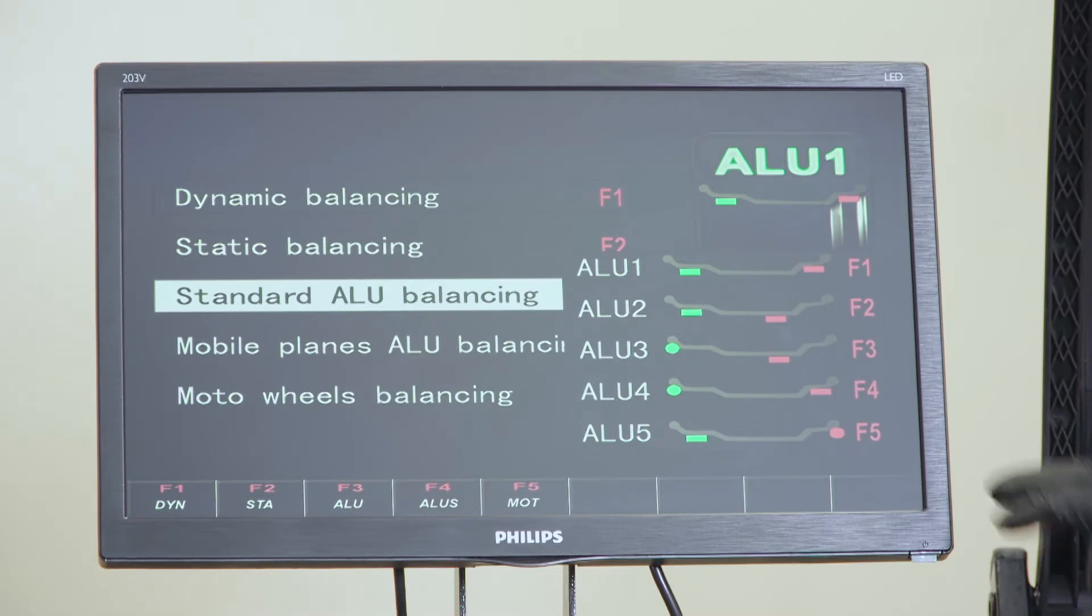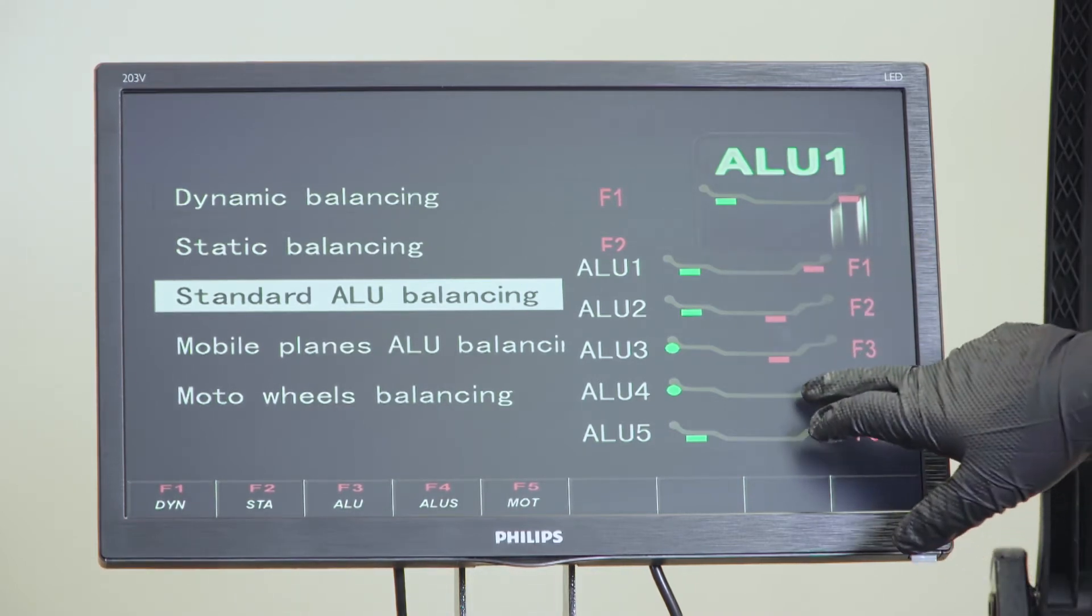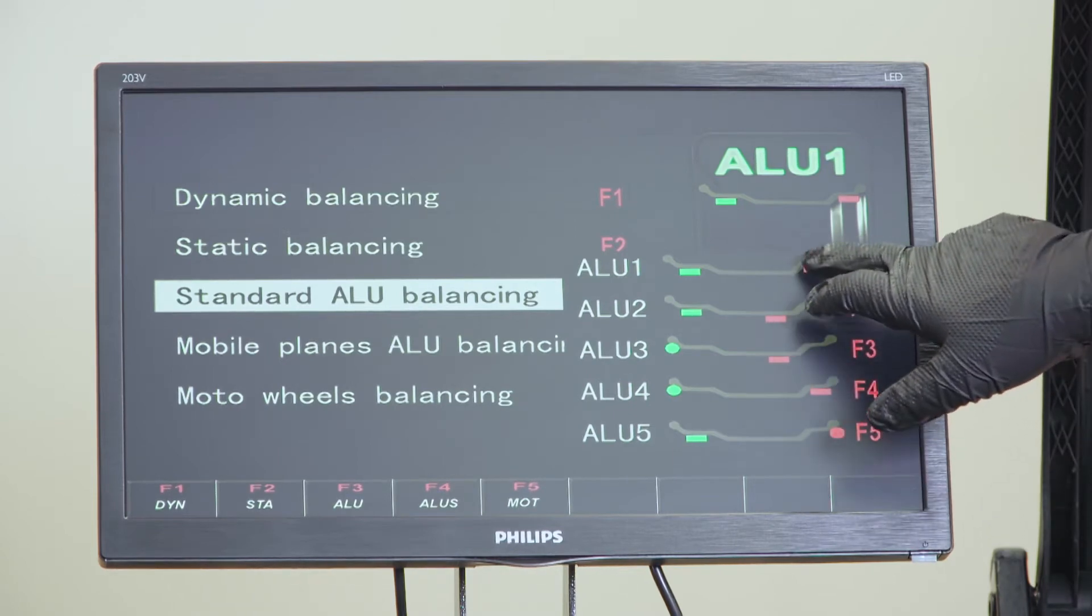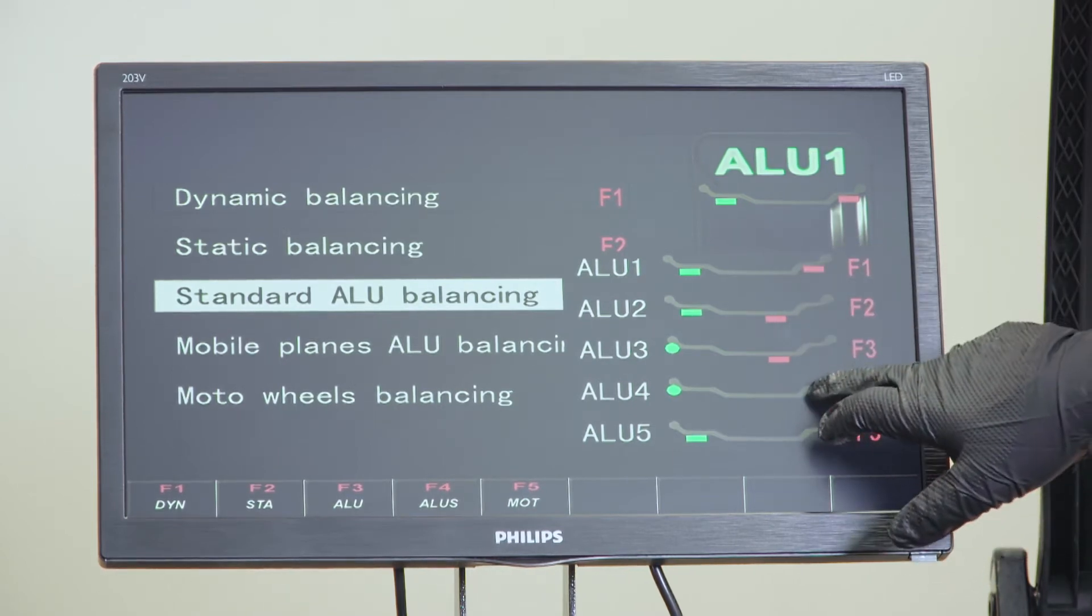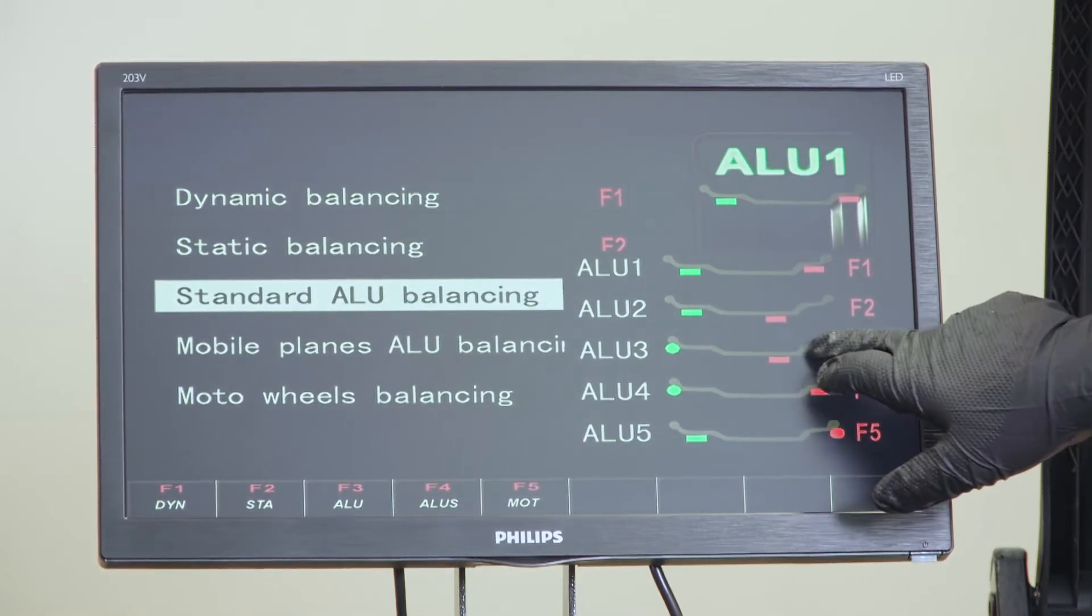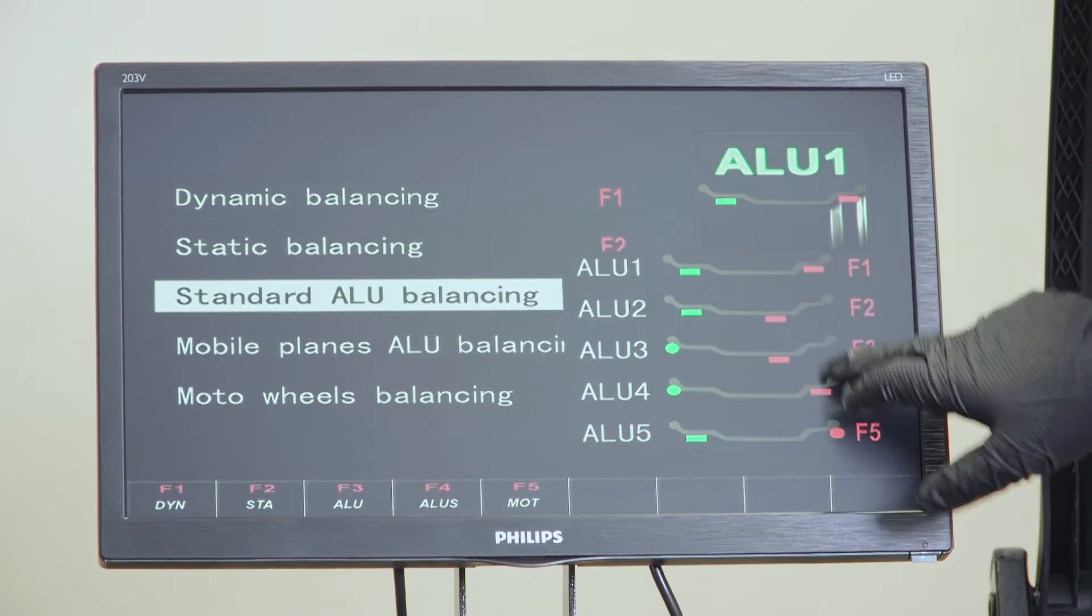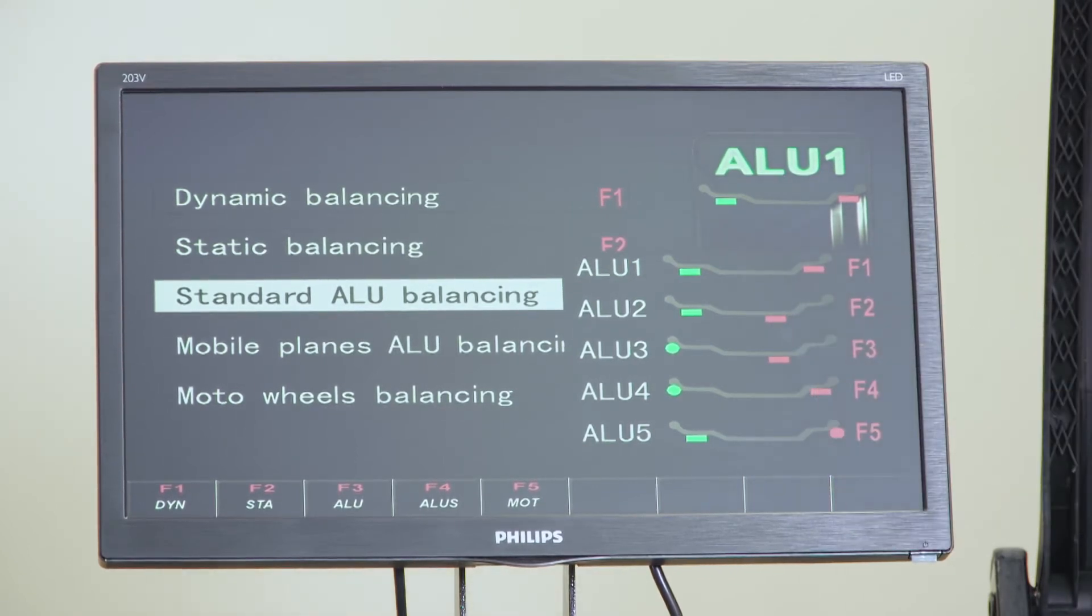The difference here is some of the rims are deep dish. So you'll have the face of the rim here and a lip on the outside. That's why the weight is here and here, so it'll go on the outside of it. We're going to do aluminum one. Choose F1.